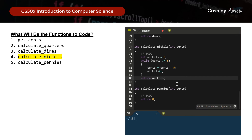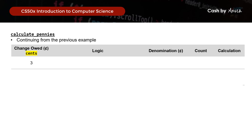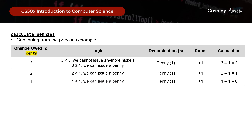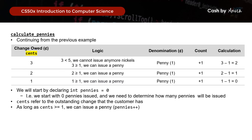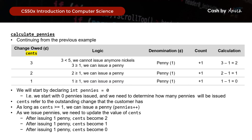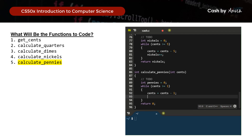Finally, we calculate pennies. Since we have 3 cents left and 3 is greater than 1 cent, we issue 3 pennies step by step. In code, we declare an integer called pennies starting at 0, and as long as cents is greater than or equal to 1, we update the remaining cents and increment the pennies count. We then return pennies.